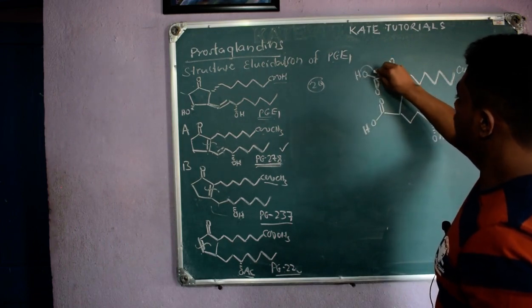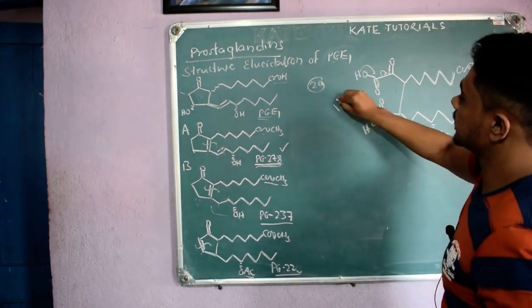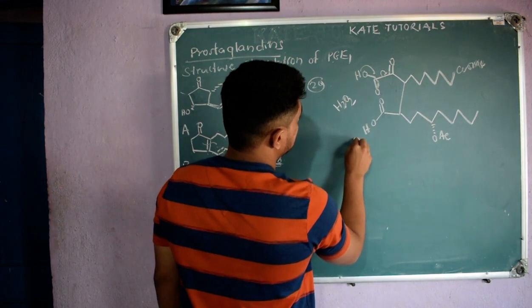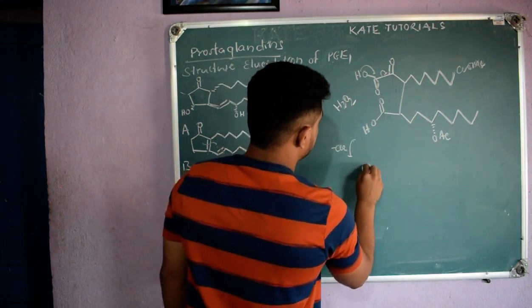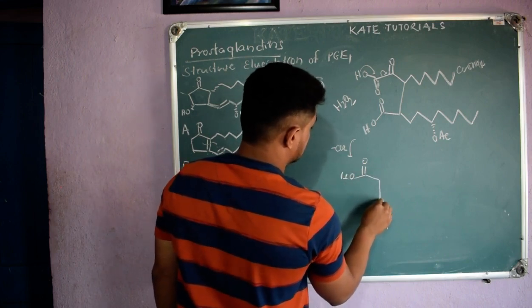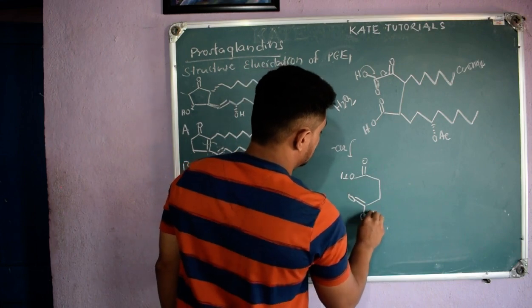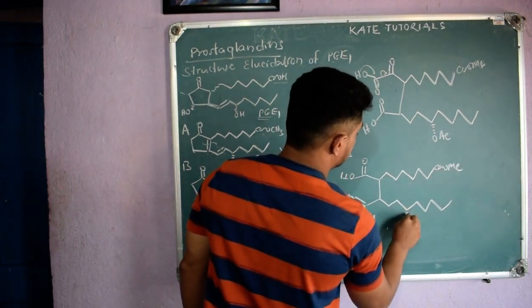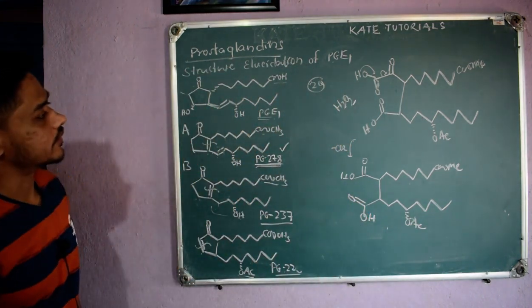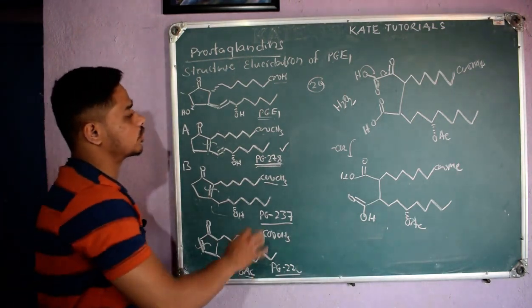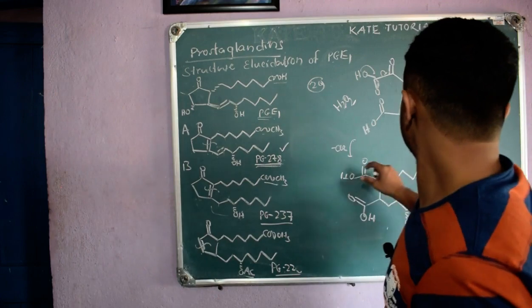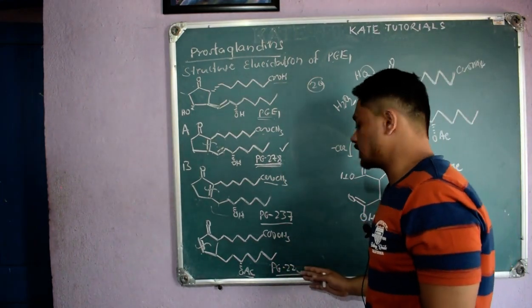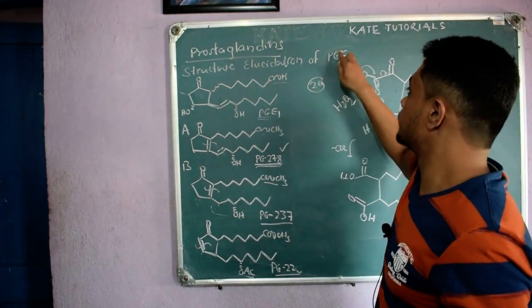The ketone group with COOH: on heating, carbon dioxide is evolved and it becomes aldehyde, but because of the oxidizing agent (H₂O₂) it becomes acid again. So I get COOH and COOH, along with COOMe and OAc. After getting all these degraded products they concluded the structures of PG237, PG278, and PG220, and from that they determined the structure of PGE1.